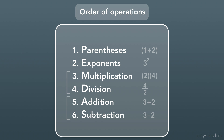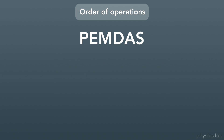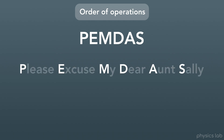First, you do the math inside parentheses. Second, you calculate any numbers with exponents. Third and fourth, you do any multiplication or division. Fifth and sixth, you do all the addition and subtraction. You can do multiplication and division at the same time, and addition and subtraction at the same time, but multiplication and division must come before addition and subtraction. To memorize this, we use the word PEMDAS — Please Excuse My Dear Aunt Sally.